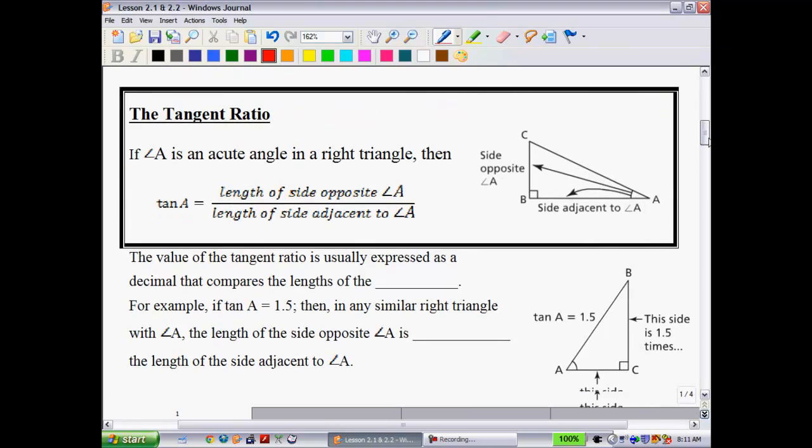All right, so I'm assuming that you have done that much. So now let's jump into the tangent ratio. Hopefully you learned a little bit about the tangent ratio right there. So if angle A is an acute angle, and acute angle means the angle is less than 90 degrees, in a right triangle, then the tangent of some angle A is equal to the length of the opposite side over the length of the adjacent side.